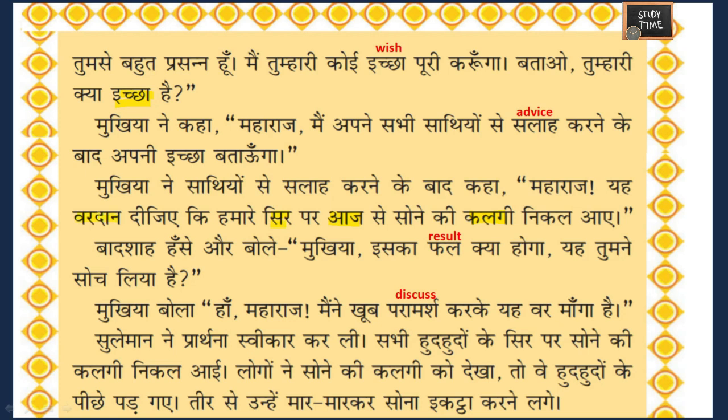The king laughed and said to the head of Hudhud, 'Mukhyan, iska fal kya hoga?' - Did you think about the result of this? Did you really think about what will happen if you get a gold crest? The head said, 'Haan Maharaj, maine khoob paramarsh karke yahi maanga hai' - Yes Maharaj, I asked for this after thorough discussion.